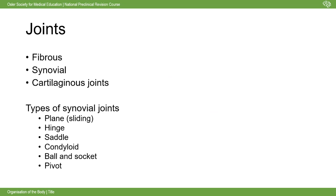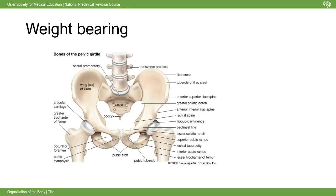There are many different types of joints. You need to know fibrous, synovial, and cartilaginous joints. Within synovial joints specifically: plane or sliding joints, hinge joints like the elbow, saddle joints like the thumb, condyloid joints like the knuckles - which enable flexion, extension, abduction, and adduction (biaxial), ball and socket joints, and pivot joints like the atlanto-axial joint between C1 and C2.